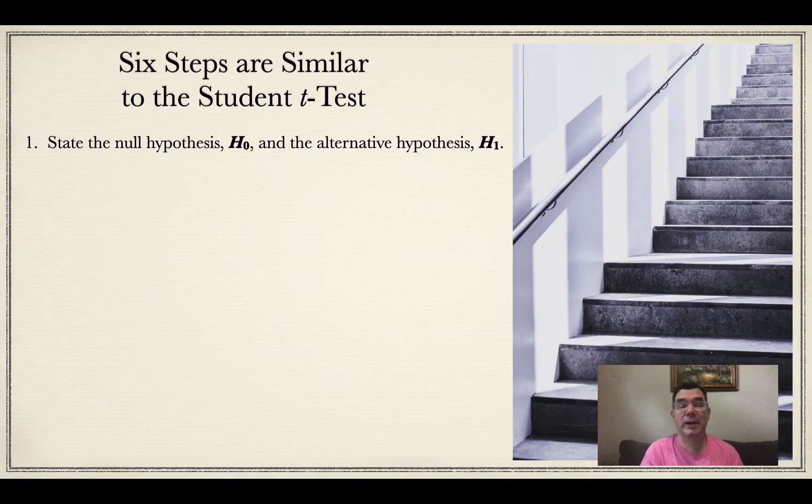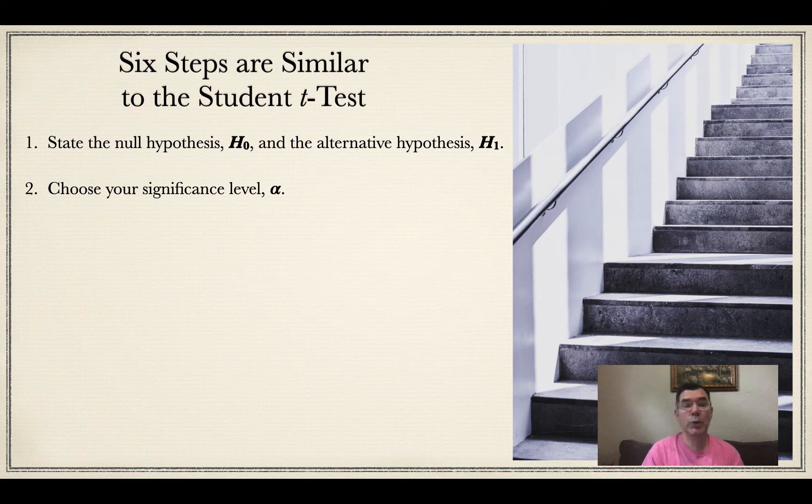The steps to doing this are very similar to the student t-test that we talked about in an earlier video, but let's just review those. The first thing we're going to do is state our null hypothesis and our alternative hypothesis. We are then going to choose our significance level and call it alpha.